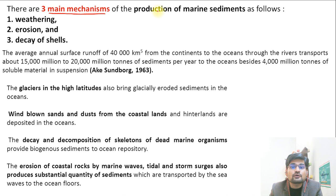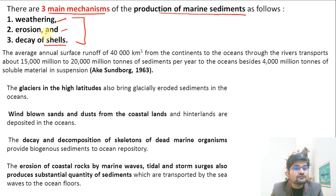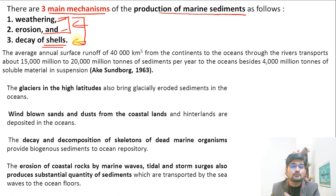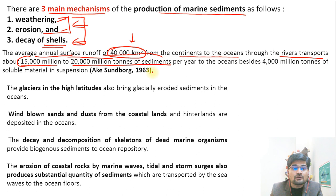The three main mechanisms of production of marine sediments are weathering, erosion, and the decay of shells. The decay of shells occurs when the shells and bodies of animals and plants decay. According to data, the average annual surface runoff of 40,000 km² from continents to oceans, through river transport, carries about 15,000 to 20,000 million tons of sediments per year — making rivers the biggest contributors.